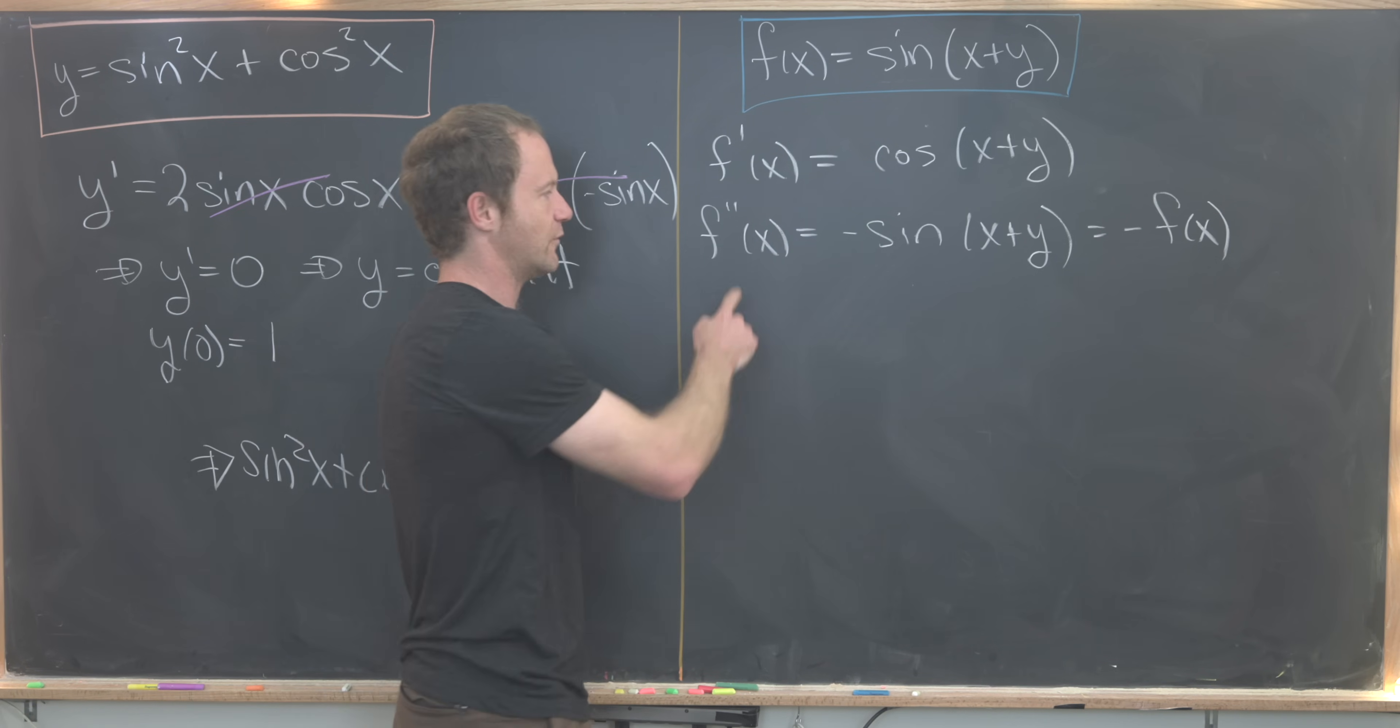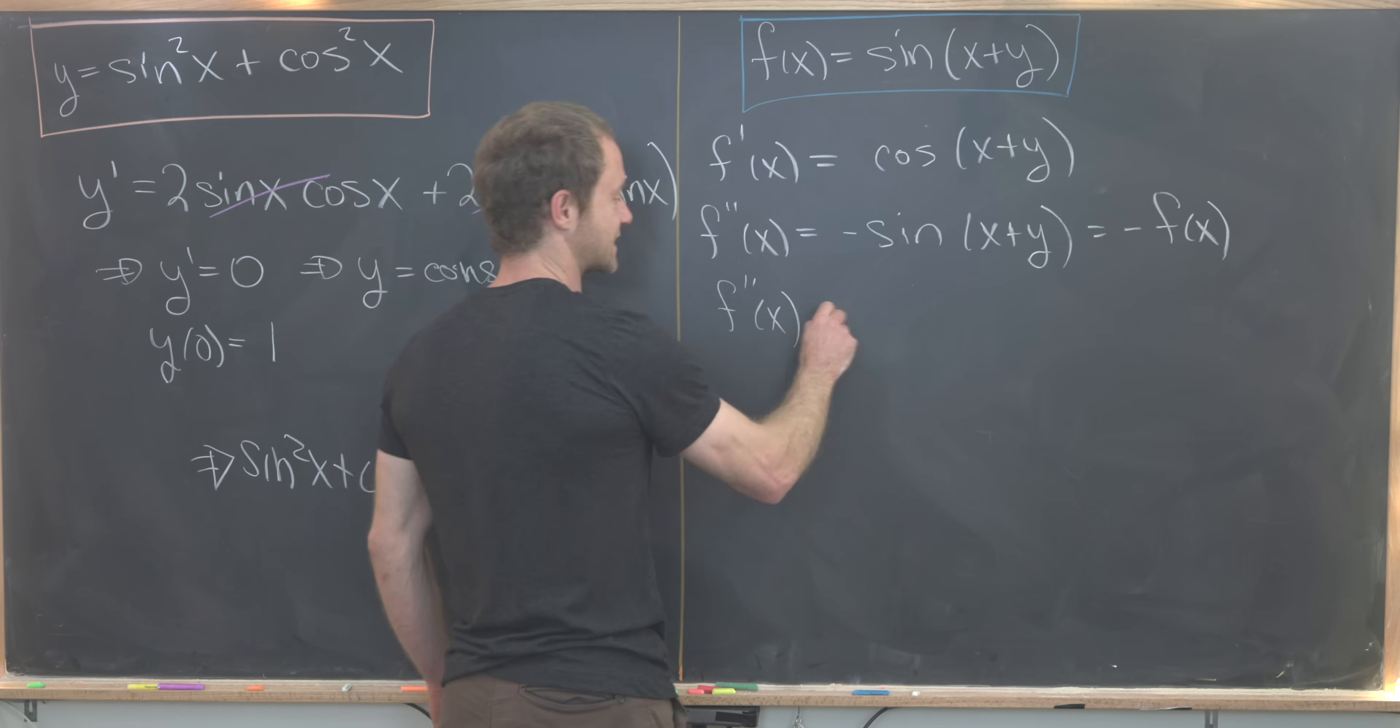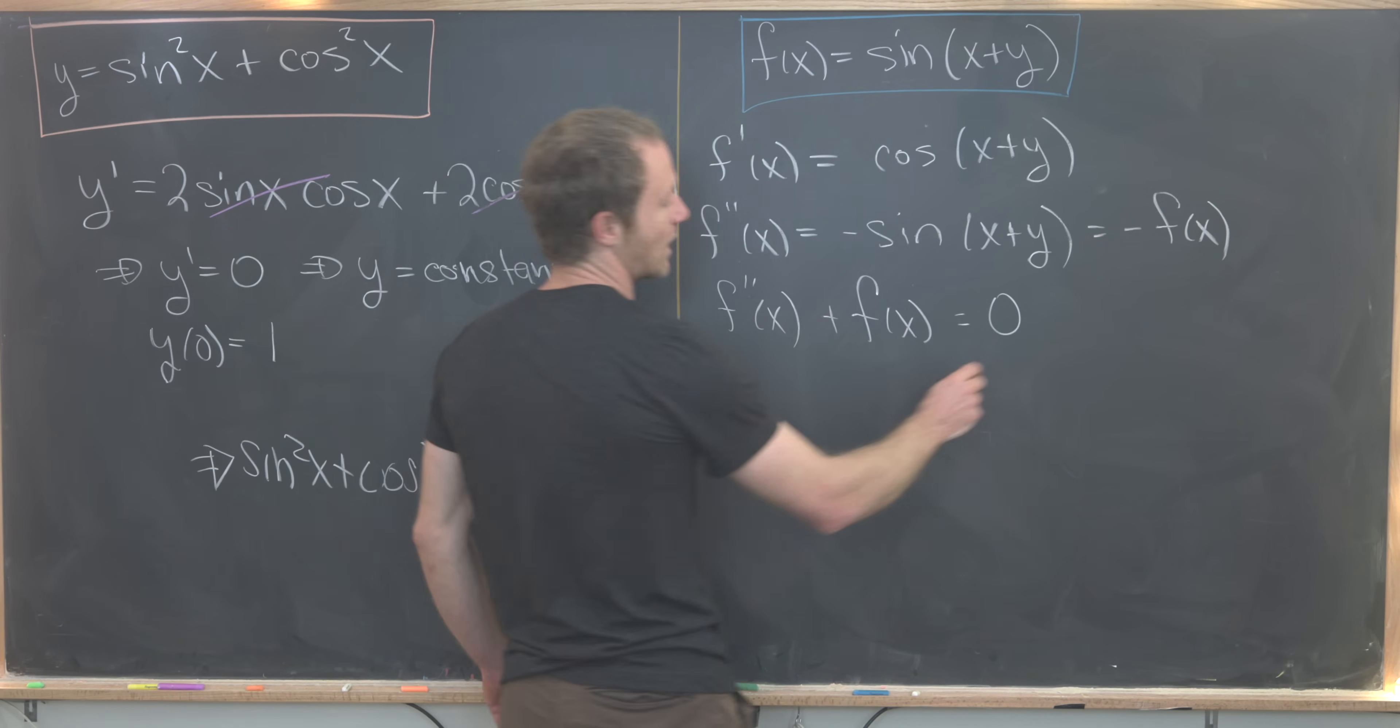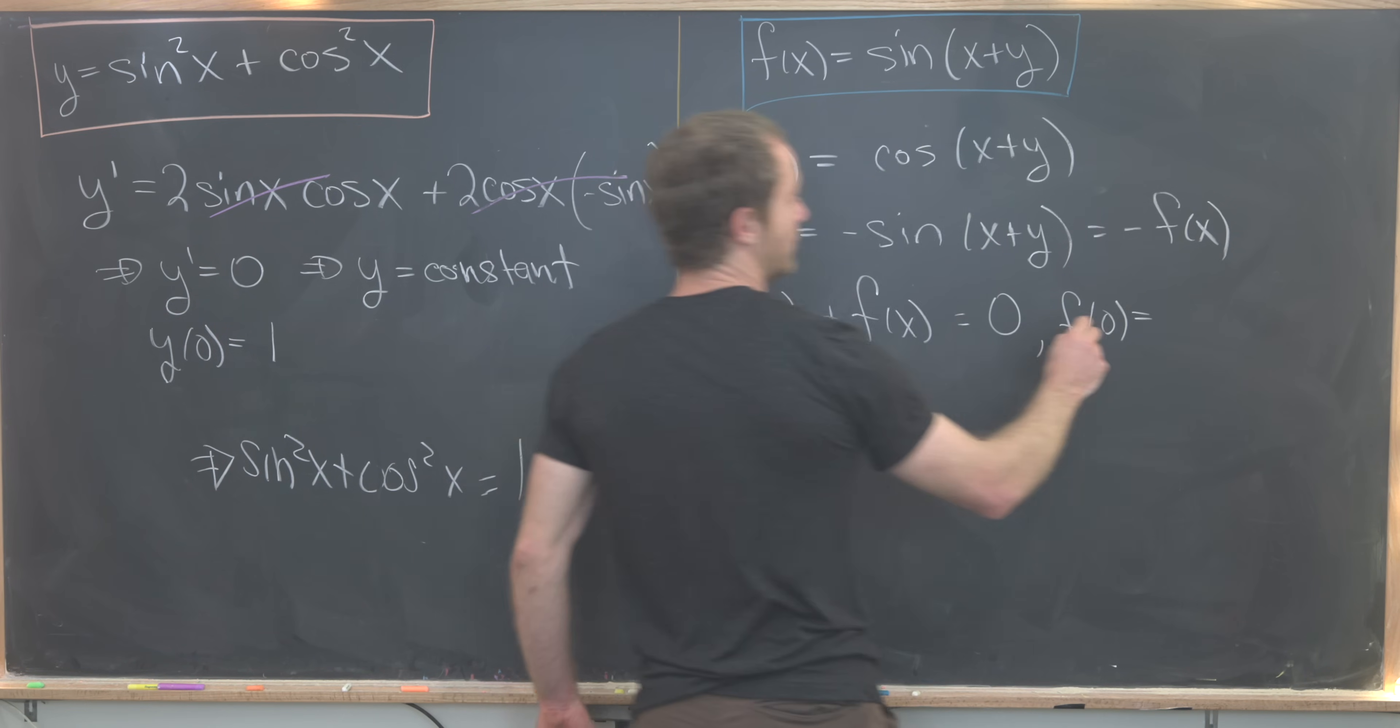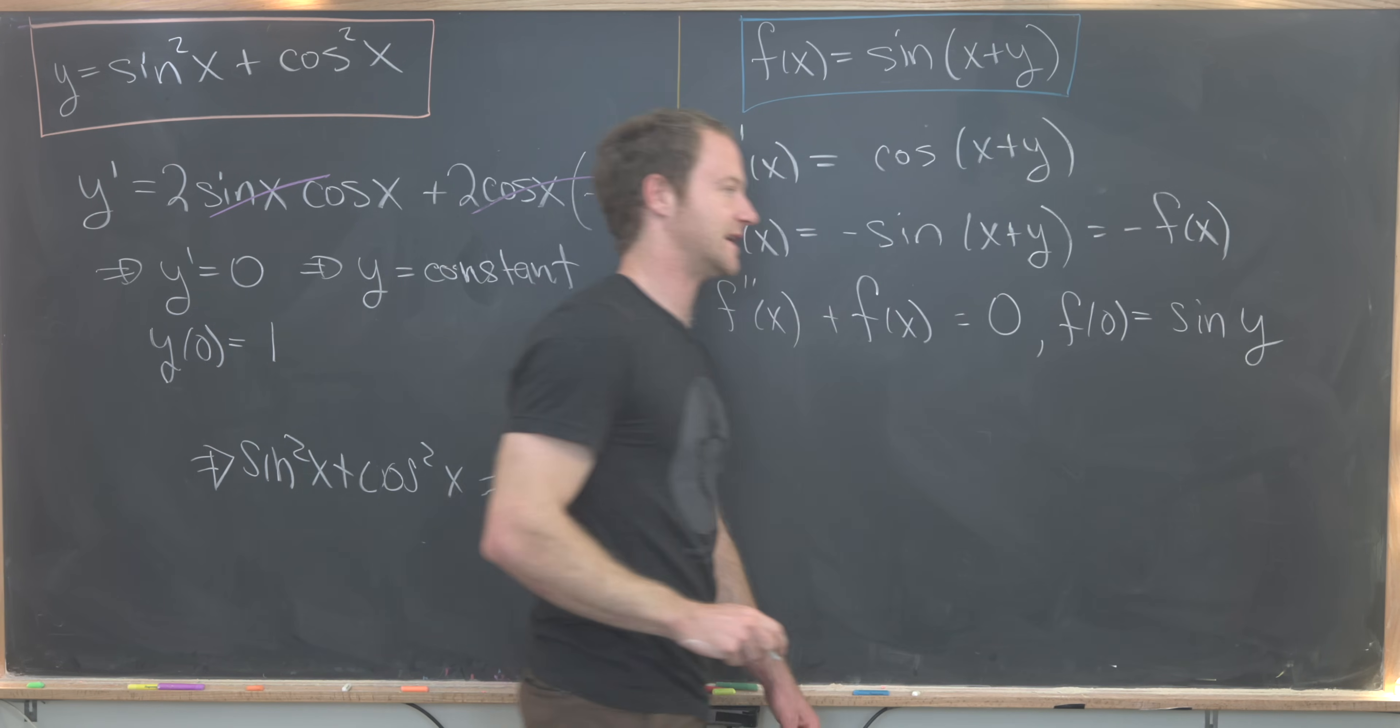What do we have? We have a second-order differential equation for our function f. We have f''(x) + f(x) = 0. If I have a second-order differential equation, that means I need two initial conditions. Let's notice that f(0) will be equal to sin(0 + y), or just sin(y).